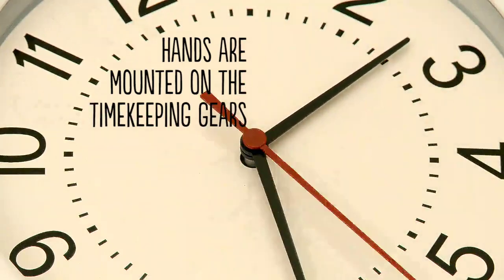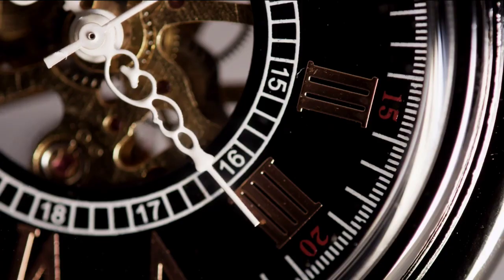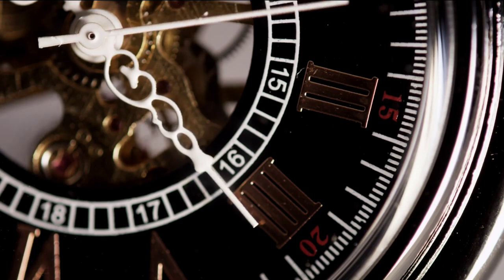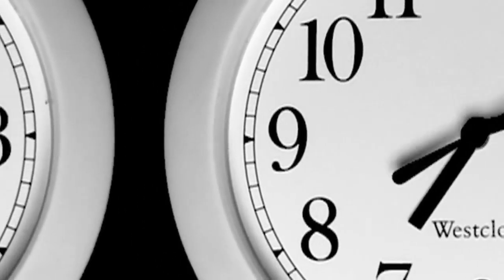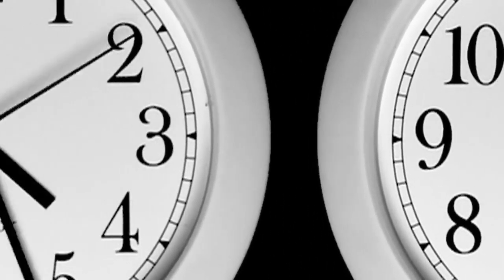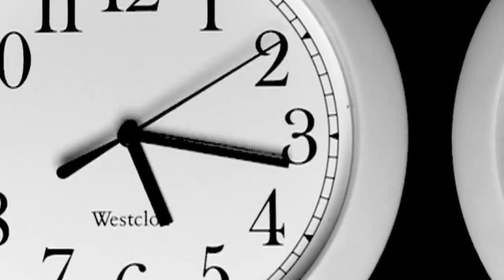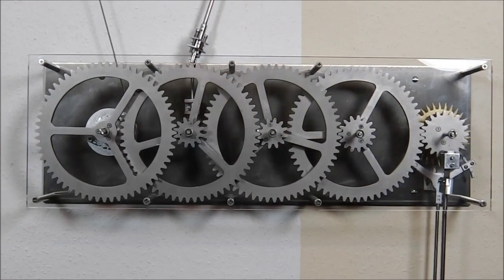It's what makes the second hand automatically turn the minute hand at one-sixtieth of its speed, and the minute hand then turns the hour hand at one-sixtieth of its speed. Next are the power gears, which take power from the falling weight of the pendulum.